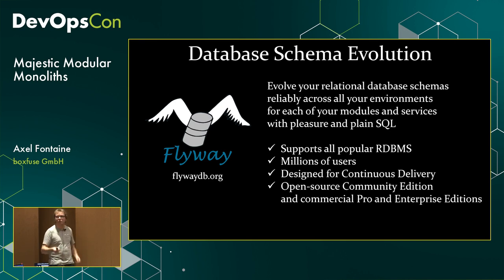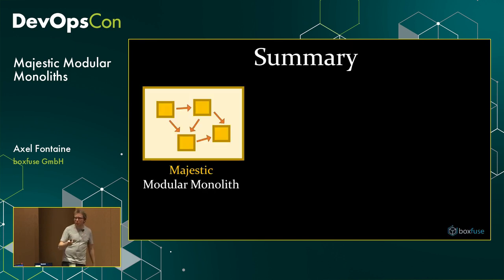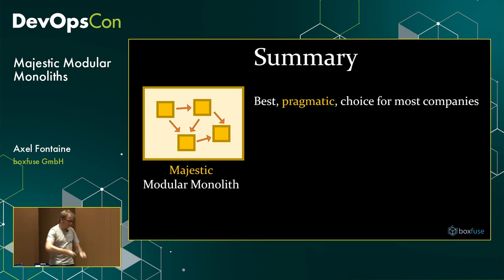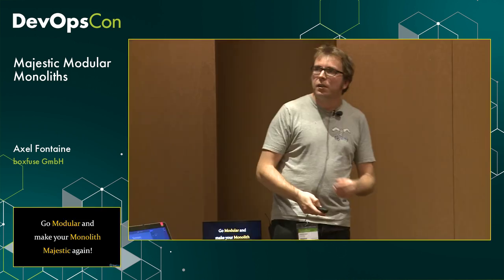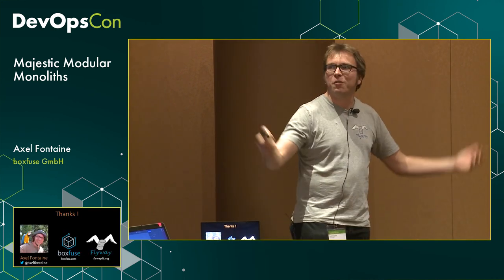To summarize: the majestic modular monolith targets the pragmatic middle ground — organizations that aren't internet giants but aren't working with toy projects either. It allows you to combine the simplicity of monoliths with the structure and focus of microservices. To rephrase: go modular and make your monolith majestic again. Thank you very much for your time.